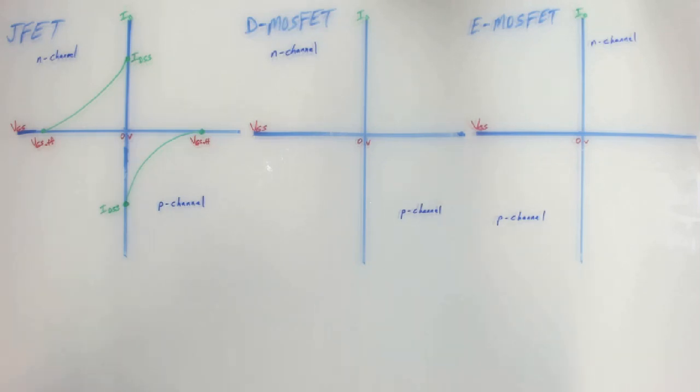So we have the JFET, N-channel, P-channel. The JFET is known as a depletion-only device because you can only deplete or decrease drain current. You can't do anything to increase it by adding voltage to the gate. You can only decrease it.